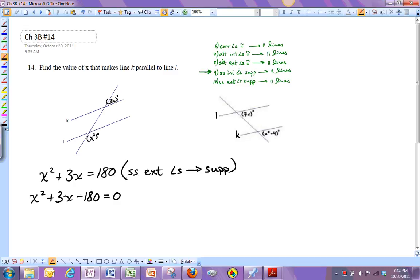So if you factor it, it might take a little practice, but it turns out that you get (X + 15)(X - 12) equals zero.